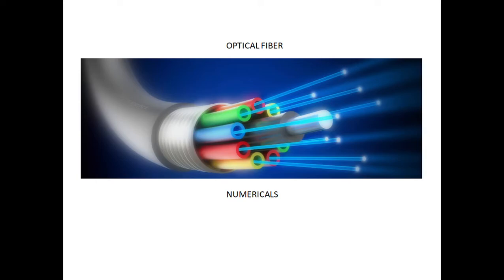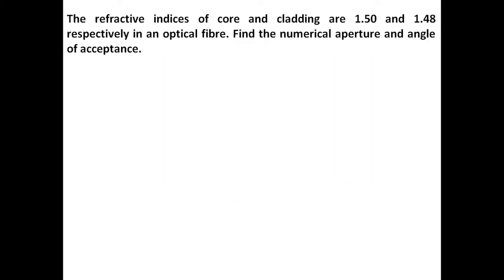In this session we will be discovering problems or numericals apart from what is given in your assignment 3a. We will have another session where we will solve the assignment 3a problems. So let's get into the first problem. The first problem is pretty straightforward. The refractive indices of core and cladding are 1.5 and 1.48 respectively in an optical fiber. Find the numerical aperture and angle of acceptance.